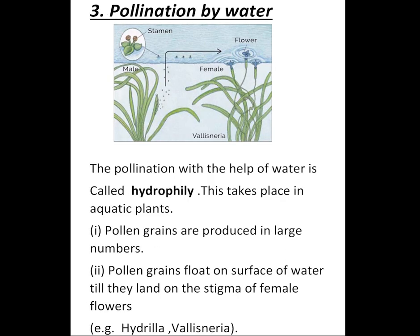Next, pollination by water. The pollination with the help of water is called hydrophily. Hydro means water. This takes place in aquatic plants. These hydrophilous plants have some adaptations. The pollen grains are produced in large numbers because there is more wastage of pollen grains in water. Pollen grains float on the surface of water till they land on the stigma of female flowers. Examples are hydrilla and vallisneria.